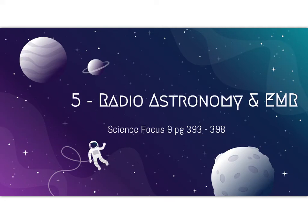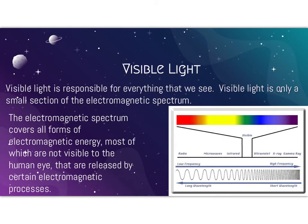Radio astronomy and EMR. Visible light is responsible for everything that we see, but it is only a small section of the electromagnetic spectrum. The electromagnetic spectrum describes all different types of wavelengths, from really short wavelengths to really long wavelengths. The visible spectrum is kind of midway, and our eyes can only see these types of wavelengths. Anything smaller or larger we can't actually see.